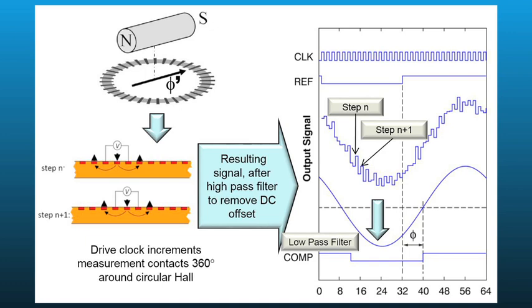At each step or group configuration around the ring, a voltage is measured. As the digital logic steps through the 64 contacts and switches, a voltage is measured at each one of those steps, resulting in a sine wave. That sine wave is representative of the orientation of the target magnet that's hovering above the angle sensor IC.